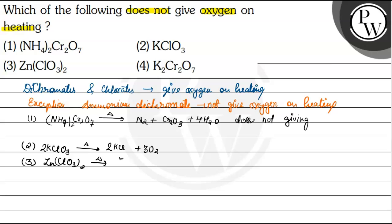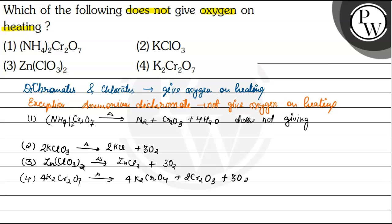The third option is zinc chlorate, Zn(ClO₃)₂. On heating, it gives zinc chloride and oxygen. The fourth option is potassium dichromate, K₂Cr₂O₇. On heating, it gives four molecules of K₂CrO₄ and three molecules of Cr₂O₃, releasing oxygen.